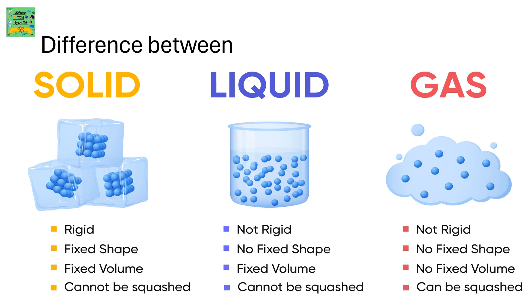Liquid — for example, water — is not rigid. It has no fixed shape; you can pour water into any container. It has a fixed volume and cannot be squashed — you cannot squash water.